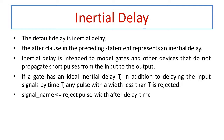Inertial delay simply acts as a rejecter. If a gate has an ideal inertial delay of t seconds, then in addition to delaying the input signal by time t, any pulse width which is less than t is rejected automatically. That means any pulse whose width is less than t seconds will be filtered out. This is the function of inertial delay.